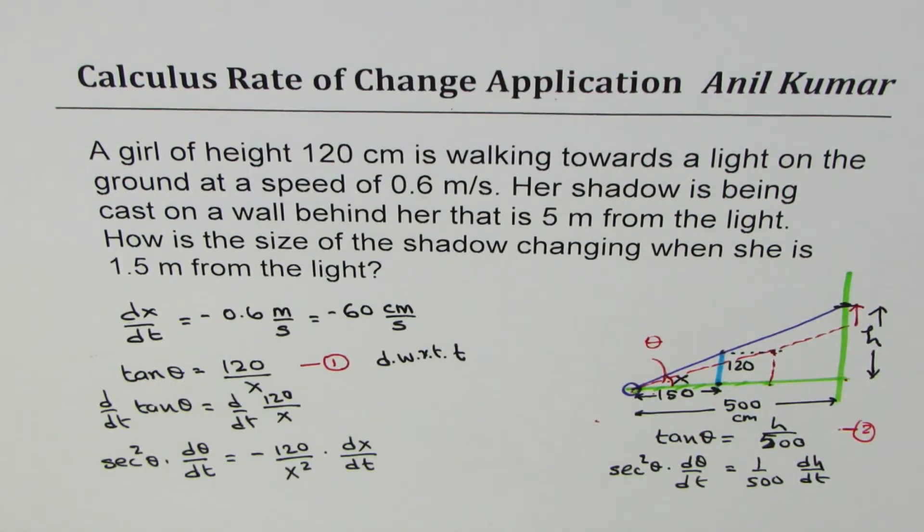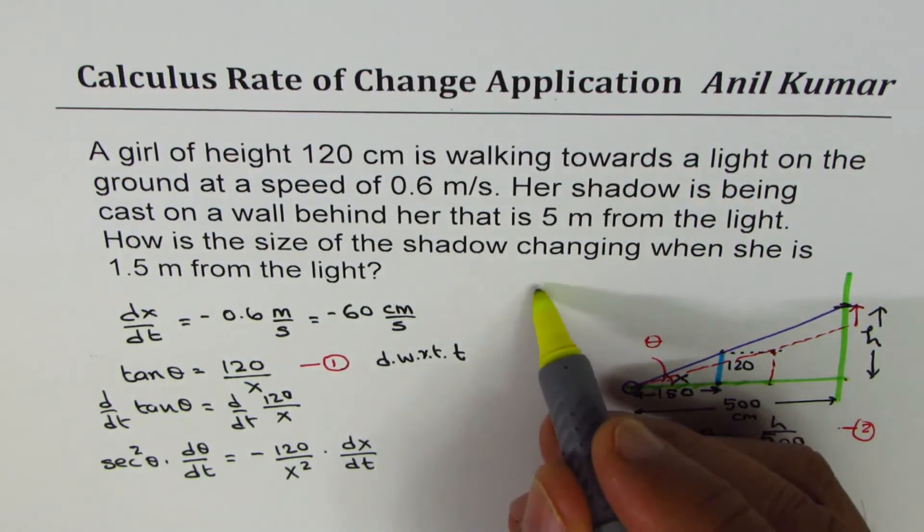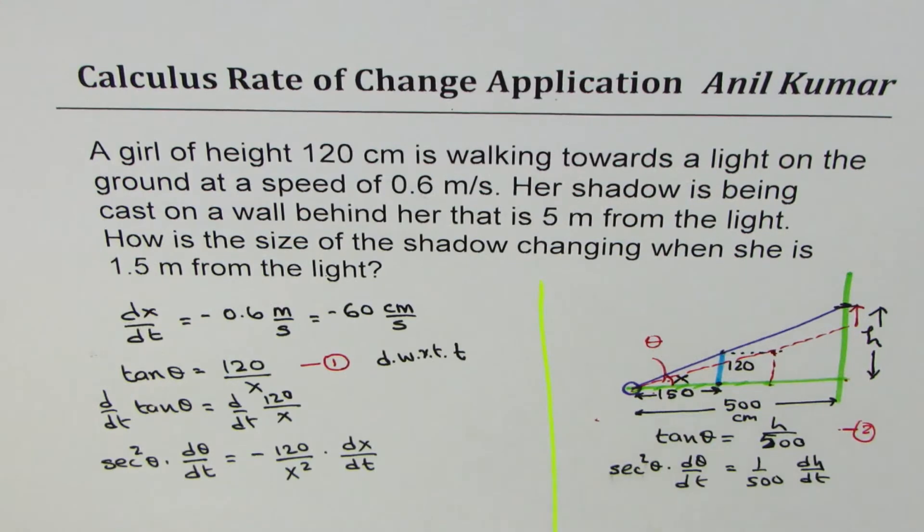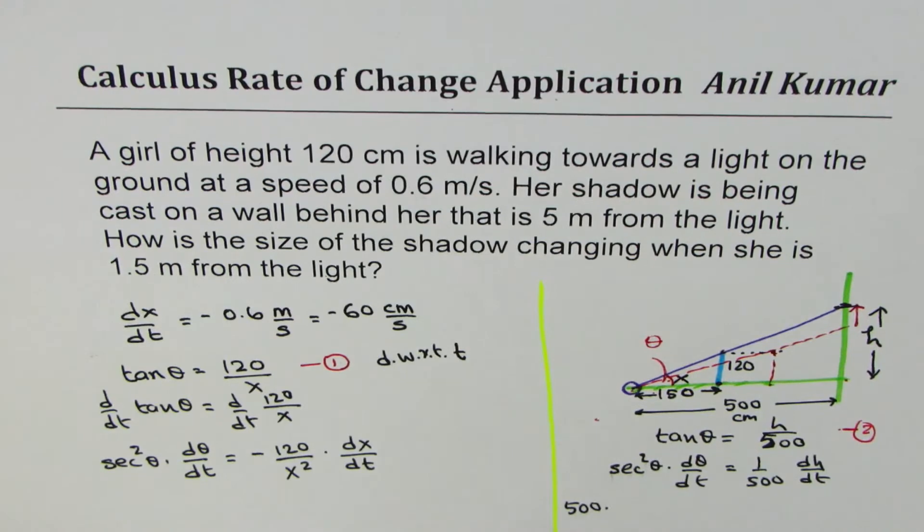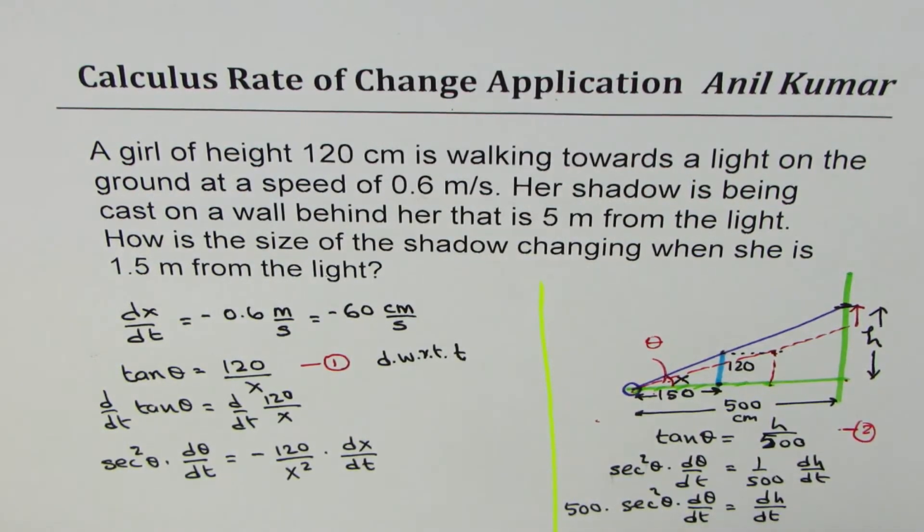It's very important to understand that in both the equations, which we are working simultaneously on each side of this line, we have secant square d theta/dt as the term. Now, if I cross multiply, I get 500 times secant square theta d theta/dt as equal to dh/dt. Do you get it? So that is what we are interested in.